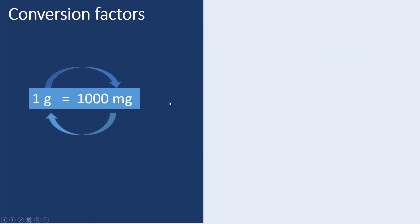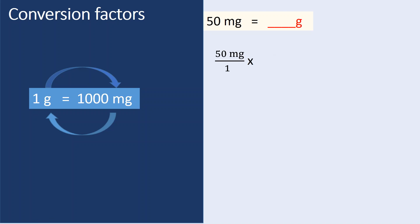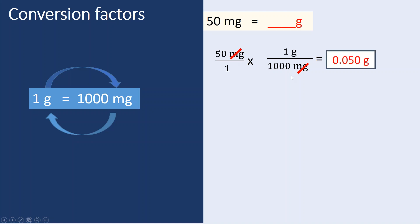Another conversion factor is grams to milligrams. For example: 500 milligrams equals how many grams? Set up the dimensional analysis — 500 milligrams, with 1 gram equal to 1000 milligrams. Milligrams cancel out, and then 500 over 1000 gives you 0.5 grams.